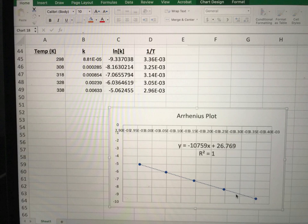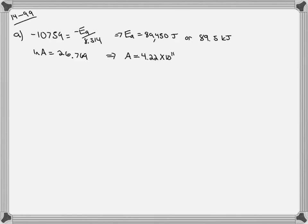So we're now going to take these two numbers and calculate the activation energy and the frequency factor. So what we had was negative 10,759 that's equal to negative Ea over R. If we prepared the graph correctly rearrangement gives us an Ea of 89,450 joules or 89.5 kilojoules. The natural log of A is going to be equal to the y-intercept which is 26.769. Take the anti-natural log of both sides or e to the and we get an A of 4.22 times 10 to the 11.